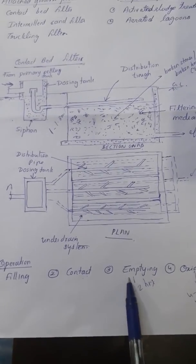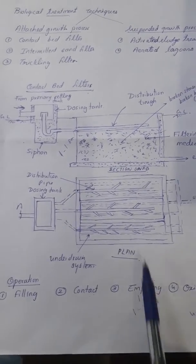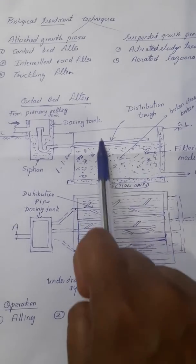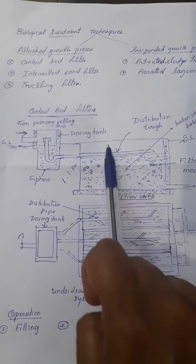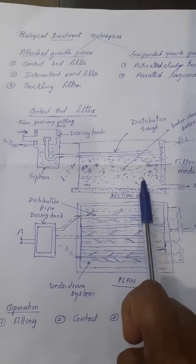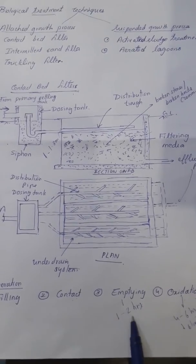The third process is emptying. In this process of emptying, the outlet valve of the under drain is then opened, and the sewage present in the contact bed is withdrawn slowly without disturbing the organic film. This operation takes about 1 to 2 hours.